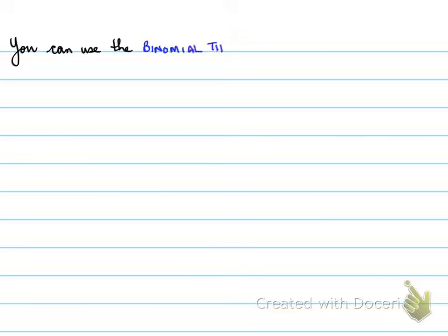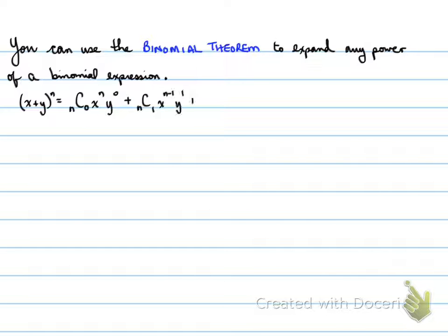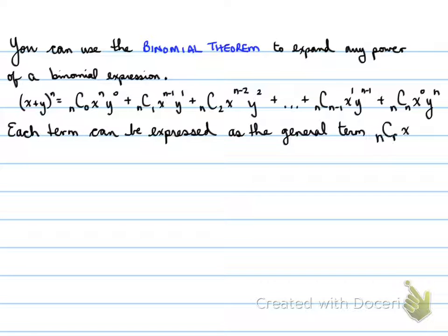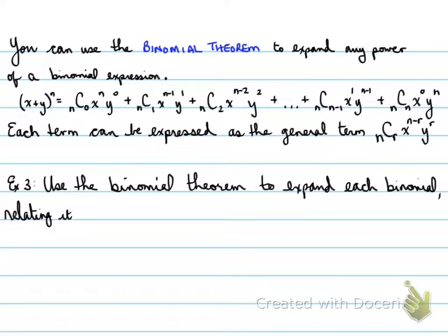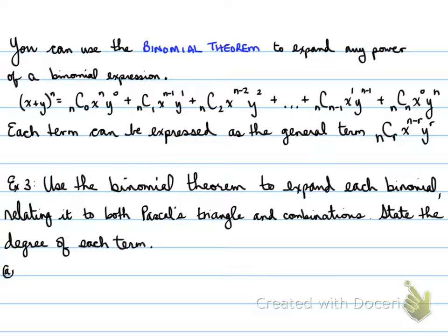Okay, another one. Now, you can use the binomial theorem to expand any power of a binomial expression. So, here's an example of how to expand it using the general terms. The best way to do this is to do this through an example. So, before we can do that, we have to remember that each term can be expressed as a general term, nCr times x to the power of n minus r times y to the r. For example, number three, let's use the binomial theorem to expand each binomial, relating it to both Pascal's triangle and combinations. State the degree of each term.